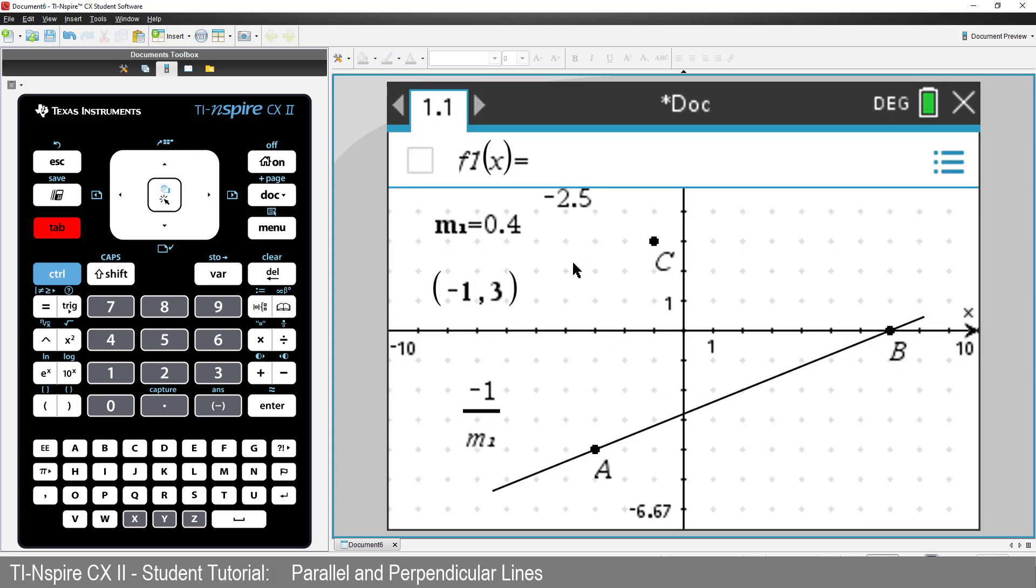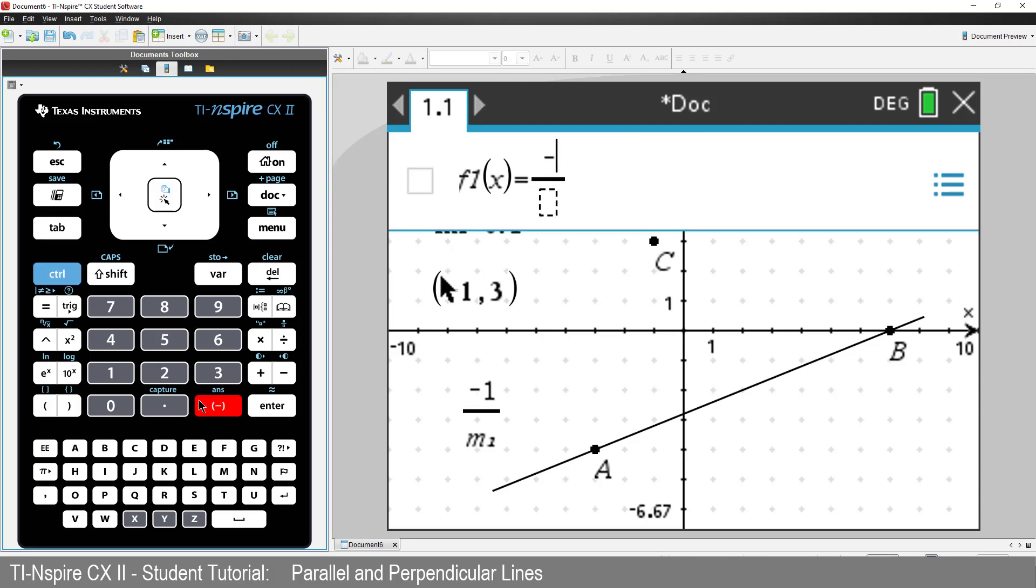Then press Tab to enter an equation. And I'll define the equation as negative 1 divided by M1 multiplied by X minus X1 plus Y1, our translational form of a straight line.